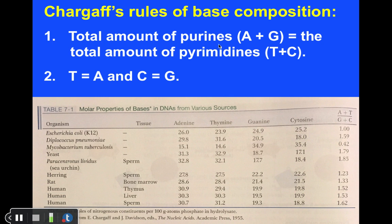Chargaff's conclusions—Chargaff's rules—were used by Watson and Crick as they worked out the structure of DNA. Chargaff concluded that the total amount of purines, namely A plus G, always equaled the total amount of pyrimidines, T plus C, regardless of which species or organism you were looking at. He also recognized that the amount of T always equaled the amount of A, and the amount of C always equaled the amount of G. These data helped Watson and Crick put together how DNA is likely structured.